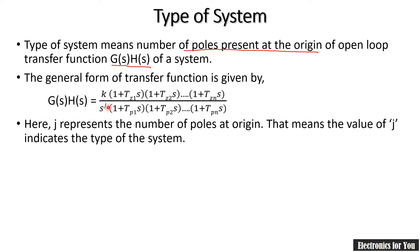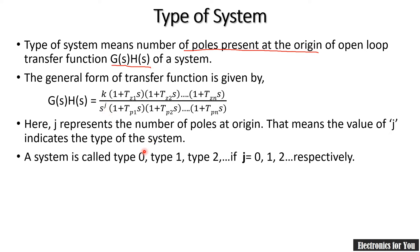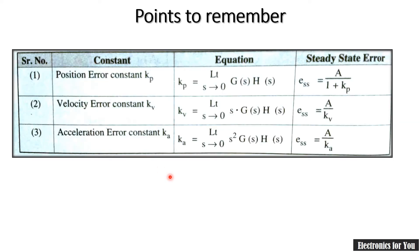If j is equal to 0, it will be a type 0 system. If j equals to 1, it is called a type 1 system, and j equals to 2 it is called a type 2 system, and so on. The value of j indicates the type of the system.